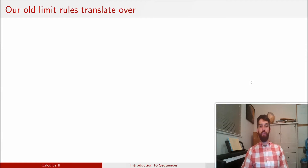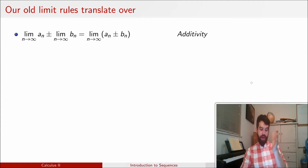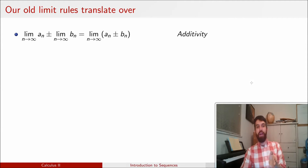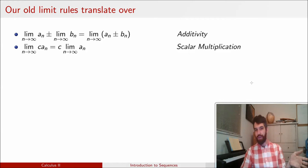Some of the rules we once had: the limit of a sum is the sum of the limits. We have that rule here — the limit of the a_n's plus or minus the limit of the b_n's is just the limit of the sum or difference of a_n and b_n. We also have a scalar multiplication rule: I can multiply by c, and c just comes along for the ride and can be factored out.